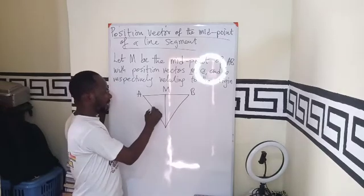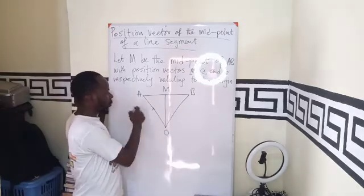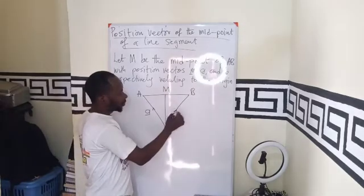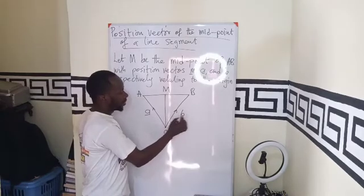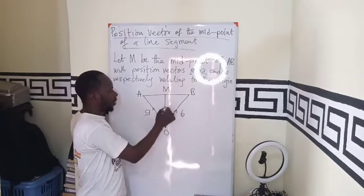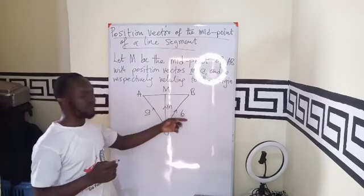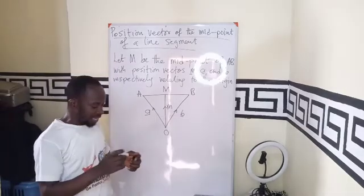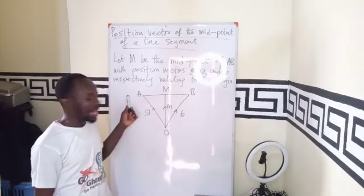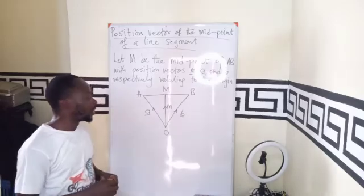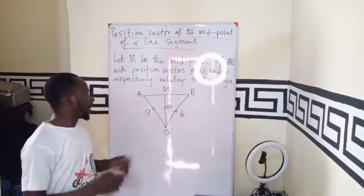So we can say that from the origin to this, we have our vector A. From the origin to B, we have our vector B. Then the origin to M, we have our vector M. So these are the position vectors. The position vector is the distance between the vector and the origin, or the relation between the origin and the vector.